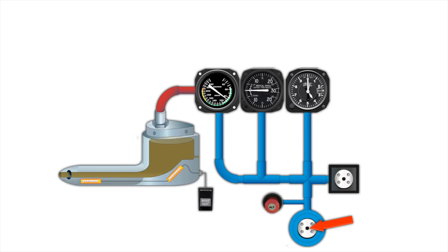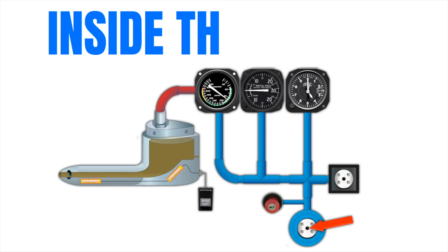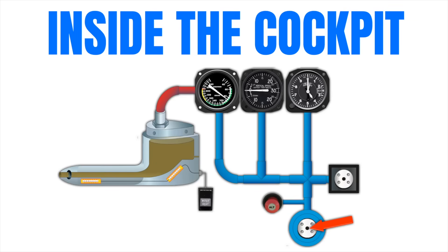The alternate static is also placed in a location where the air is relatively undisturbed. Most of the time, this is inside the cockpit of the aircraft. Both static ports connect to all three instruments through tubing in the aircraft, and this is what allows all of these instruments to work.